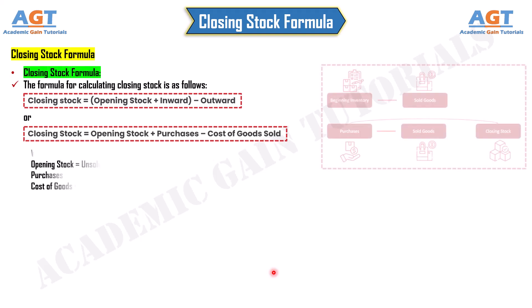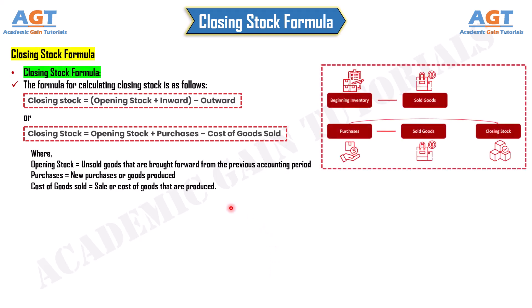Where: Opening stock is the unsold goods that are brought forward from the previous accounting period. Purchases represents new purchases or goods produced. Cost of goods sold represents sale or cost of goods that are produced. This was all about the closing stock formula, which is important in determining the closing stock of a business at the end of an accounting period.